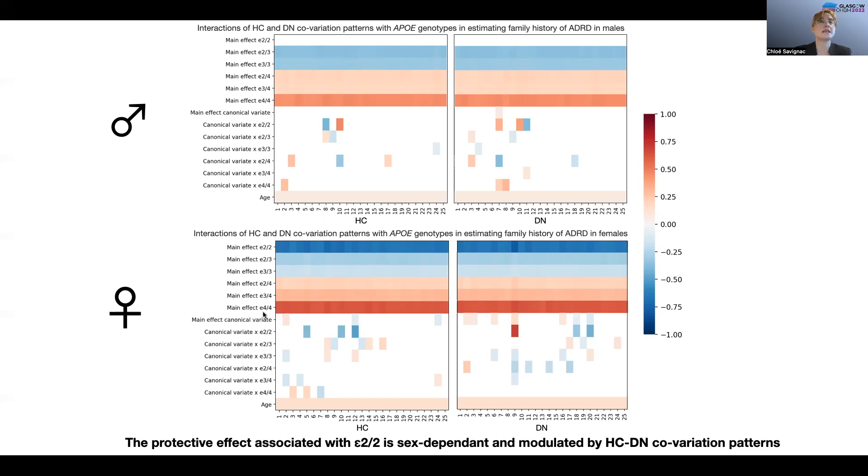So in females, we see that E4E4 is associated with more risk than E3E4, which is in turn associated with more risk than E2E4. So it seems as if E2 can still be protective against Alzheimer's disease in the presence of an E4 allele because we observe these differences in coefficients that are not found in males.